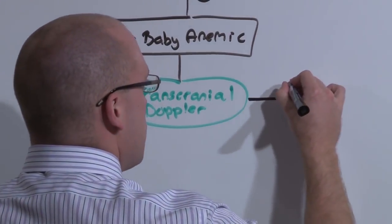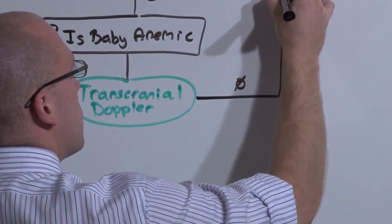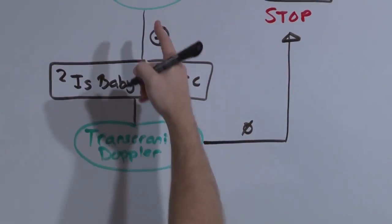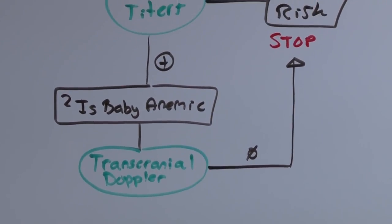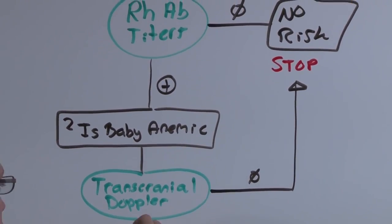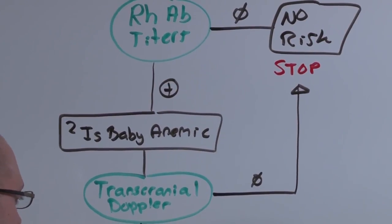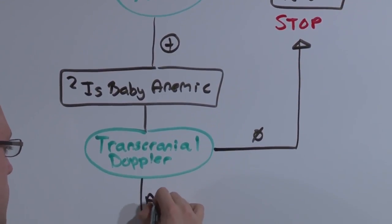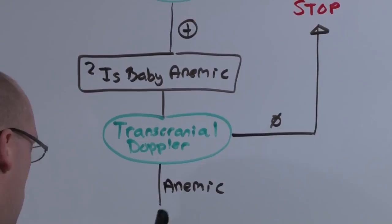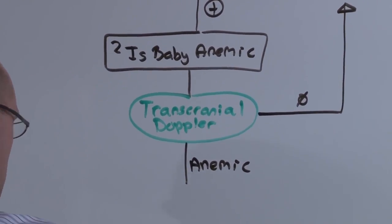Whereas the other procedures, the amniocentesis and the PUBS, are invasive and will cause some risk of fetal loss. So the transcranial Doppler is the best test of choice to assess if baby is anemic. If baby's not anemic, you can stop, even if mom had all the titers and the right subtypes.